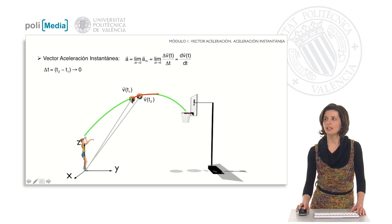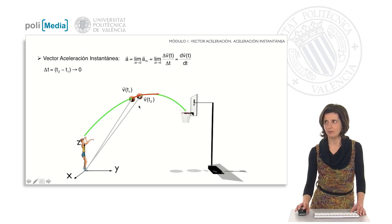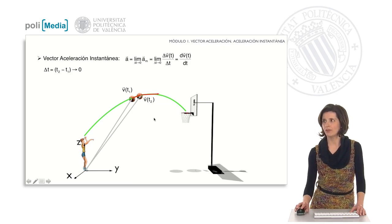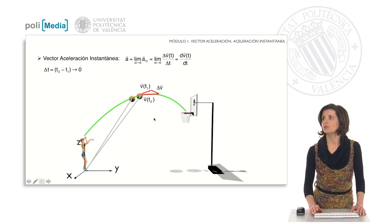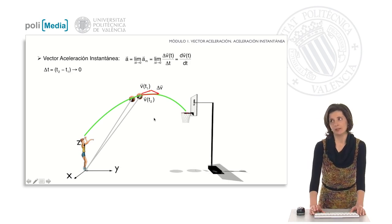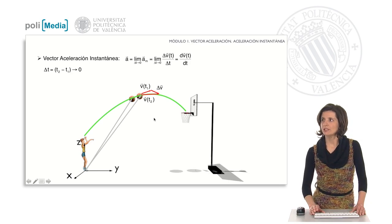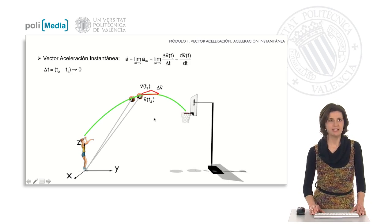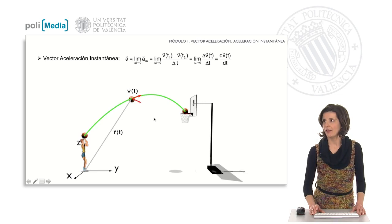In the image we see the ball in two positions that we will assume infinitely close. We have also drawn the velocity vector at these two moments. If we calculate geometrically the difference between these two vectors, the vector increment of v determines the direction of the acceleration vector.